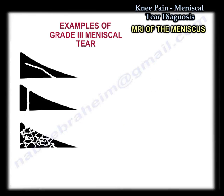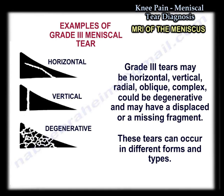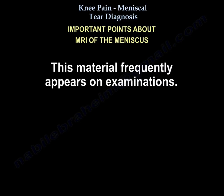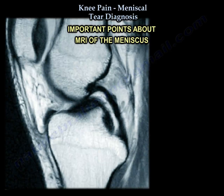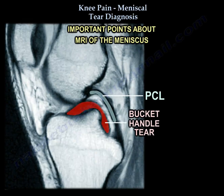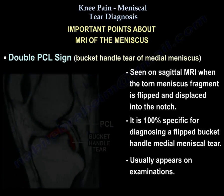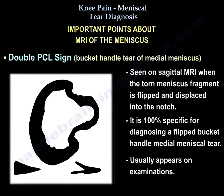Grade three tears may be horizontal, vertical, radial, oblique, or complex. They could be degenerative and may have a displaced or missing fragment. The first important MRI sign worth knowing is the double PCL sign, which represents a bucket handle tear of the medial meniscus. It is seen on sagittal MRI when a torn meniscus fragment is flipped and displaced into the notch.